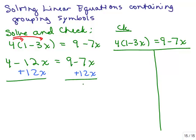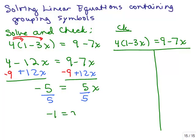I'm going to have a plus 5x on this side. I'd also like to get rid of this 9, so subtracting 9 from both sides gives me 4 minus 9 on the left side — that's negative 5 equals 5x. Dividing both sides by 5 gives me negative 1 equals x.